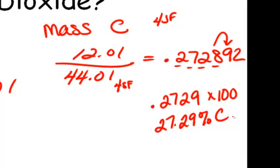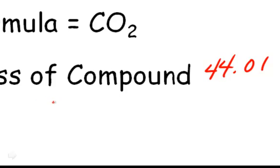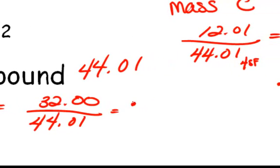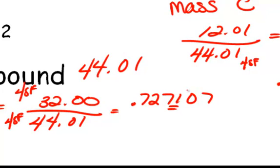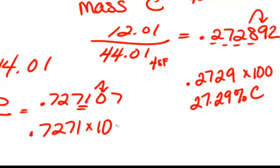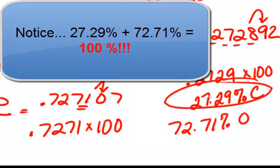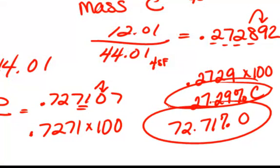For oxygen, we have to take another step. There's 2 times 16 for oxygen, which means that the mass of oxygen is 32.00. We take that divided by 44.01 and we get .727107. Again, we have four significant figures and four significant figures. So our fourth significant figure is the 1. We look to the right — the 0 tells the 1 to stay a 1, so we have .7271. We take this and multiply it by 100 to create a percent and we get 72.71%. So there are two percent compositions for carbon dioxide.